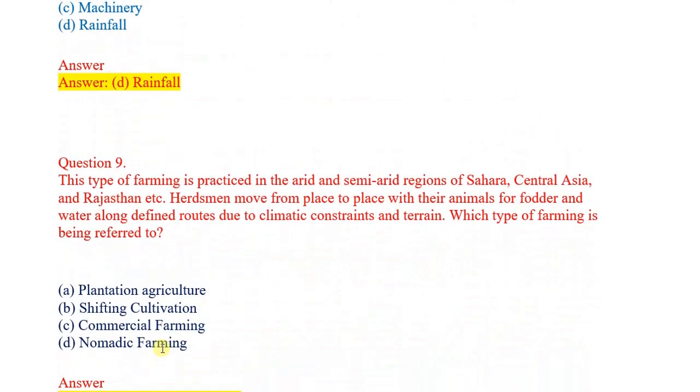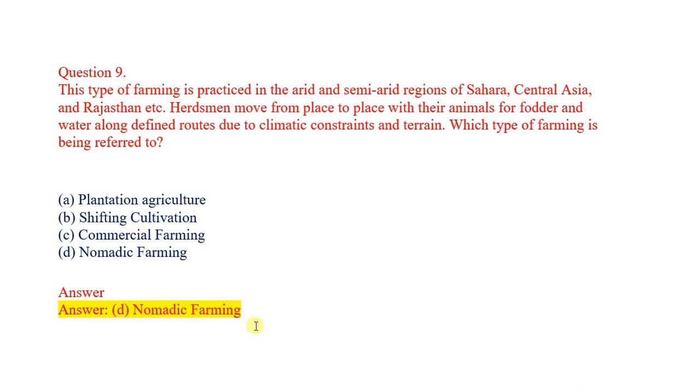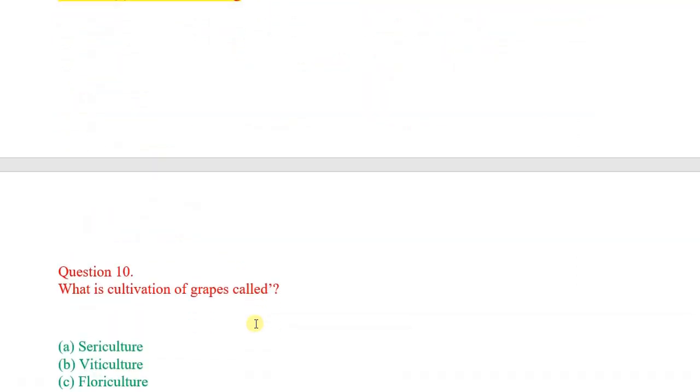Next 9th question: This type of farming is practiced in the arid and semi-arid regions of Sahara, Central Asia and Rajasthan. Herdsmen move from place to place with their animals for fodder and water along defined routes due to climatic constraints and terrain. Which type of farming is being referred to? Options: plantation agriculture, shifting cultivation, commercial farming, nomadic farming. Correct answer: nomadic farming.